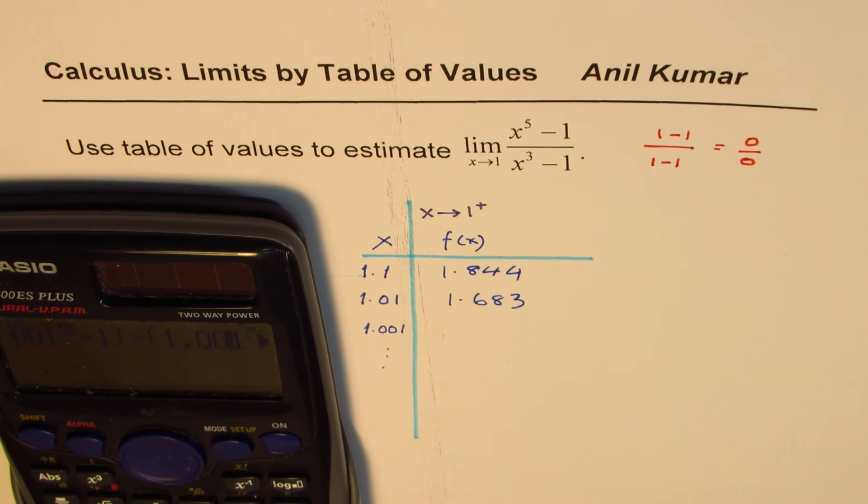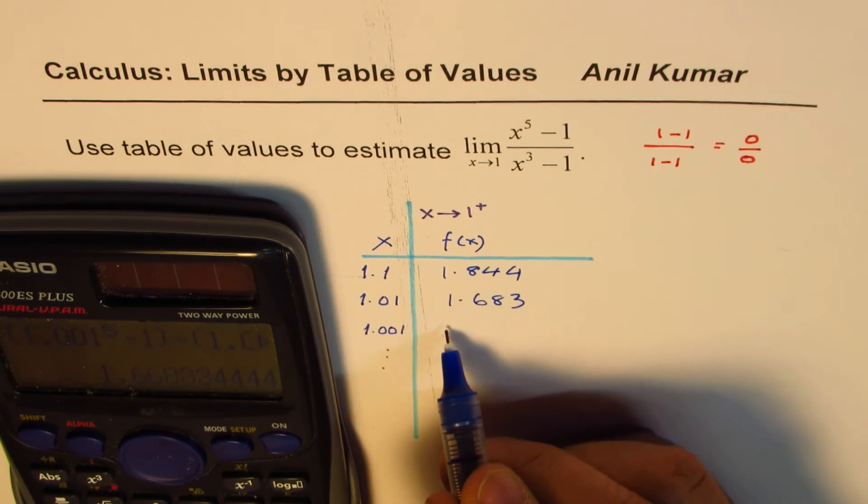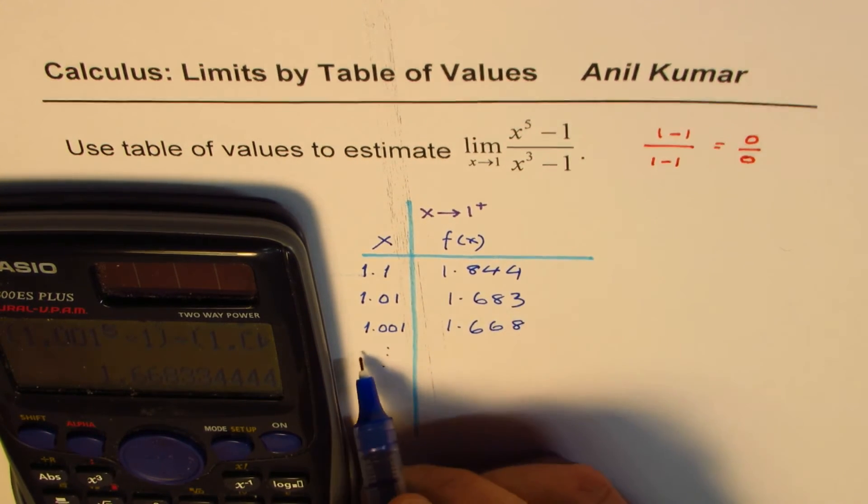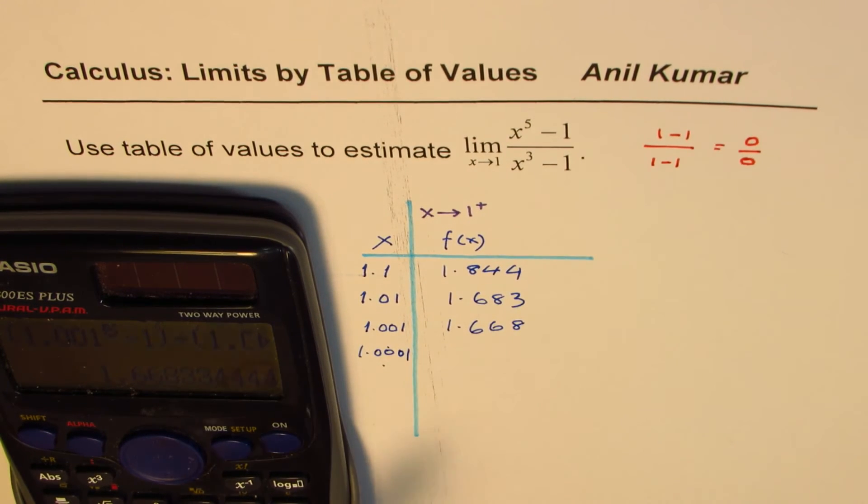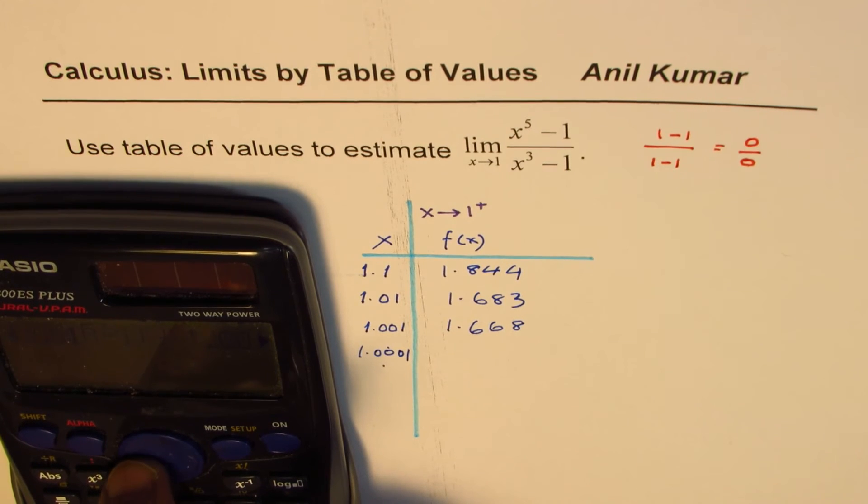Equals to 1.668. Do you see that? Now if I do one more time, so then what happens? See, so now we have 1.0001.